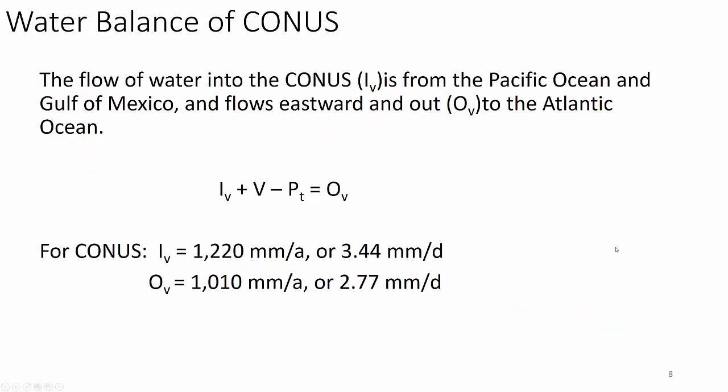The inflow of water into the continental United States comes from the Pacific Ocean and Gulf of Mexico — the oceans give us our water — and it flows eastward and out over the Atlantic Ocean. For the continental US, inflow from the oceans is about 1,220 millimeters per year (3.44 mm/day), outflow is about 1,010 millimeters per year (2.77 mm/day). The difference — 0.7 millimeters per day — is what stays on the land.